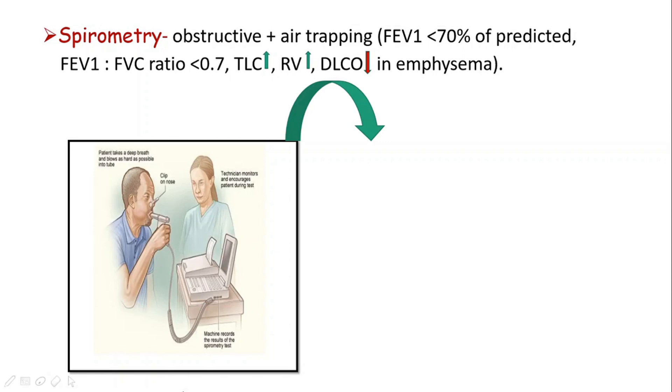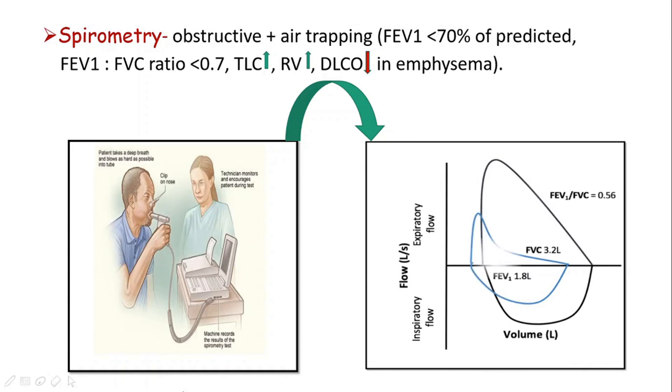We discussed about air trapping, and DLCO which is the gas transfer or the CO-diffusing capacity is decreased in emphysema. It is important to note the shape of the curve in a COPD patient as compared to the normal flow against volume curve.